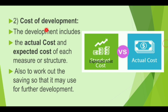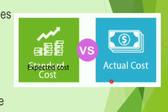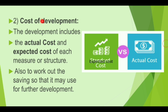The second type in evaluation is cost of development. This includes the actual cost and expected cost of each measure. While performing a development activity, it bears some cost, and sometimes there is variation between actual and expected cost. We have to understand the cost of development and also work out savings so that they may be used for further development.